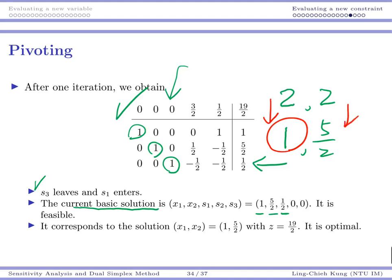Then we should produce product two a little bit more, and the best thing we may do is to increase it to five over two. We're going to have some leftover here for resource one, but that's the best we can do. So that's how we see an optimal solution. It corresponds to this solution, and z is decreased a little bit. Previously it was 20, now it becomes 19 over 2. Everything makes sense.